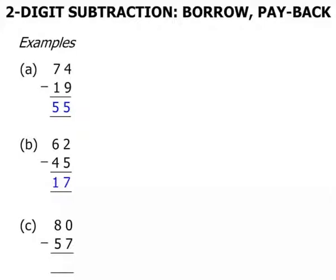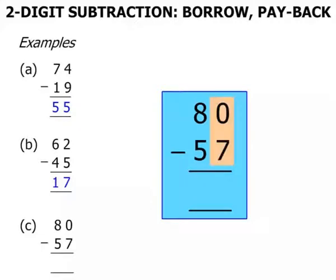The next one, 80 minus 57. Let's rewrite the question. Starting in our 1's column. 0 minus 7. We can't do that.